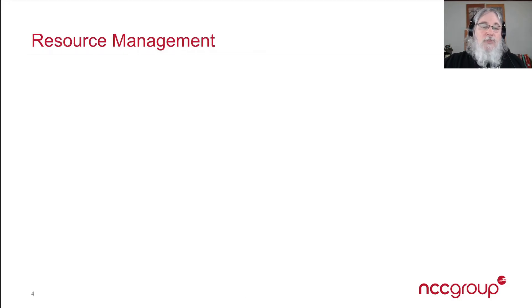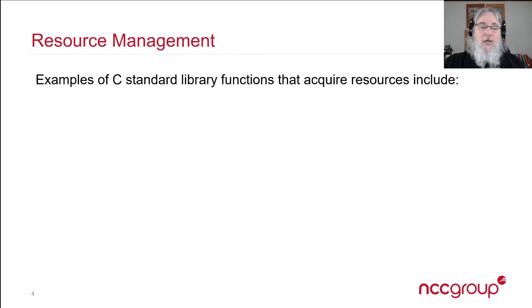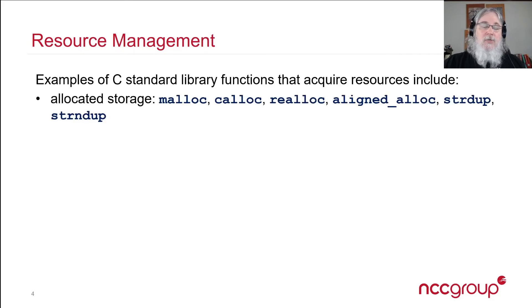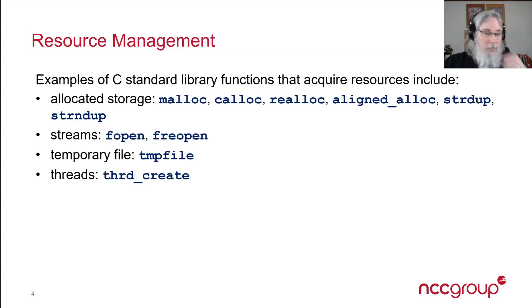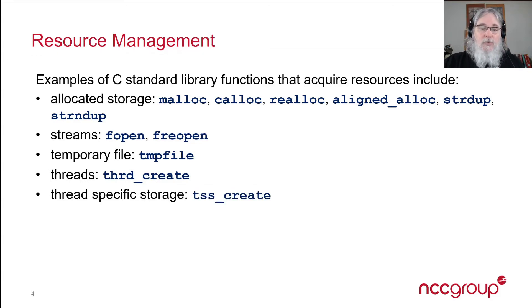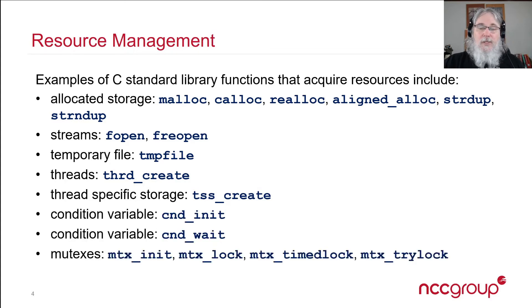Resource management is a driving use case for this technology. Examples of C Standard library functions that acquire resources include functions that allocate storage, including malloc, calloc, realloc, and even functions like strdupe and strndupe; functions that allocate streams, such as fopen and freopen; tmpfile; thread_create; thread-specific storage; conditional variables; as well as mutexes.